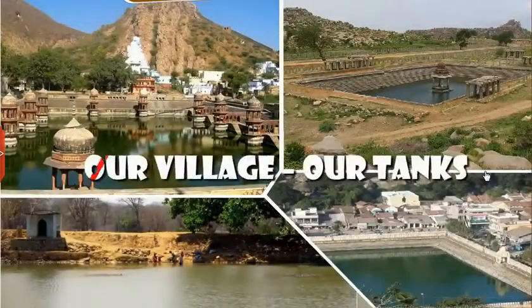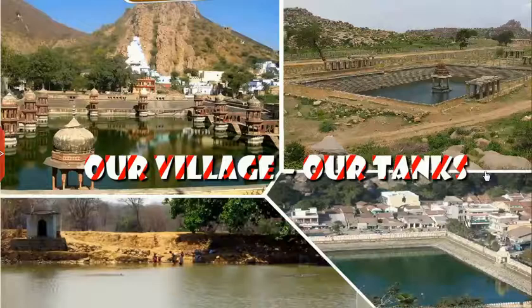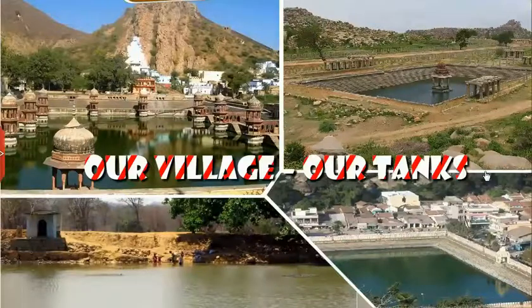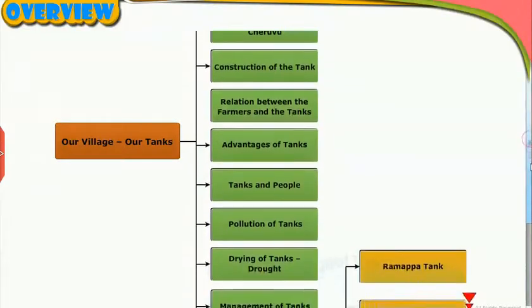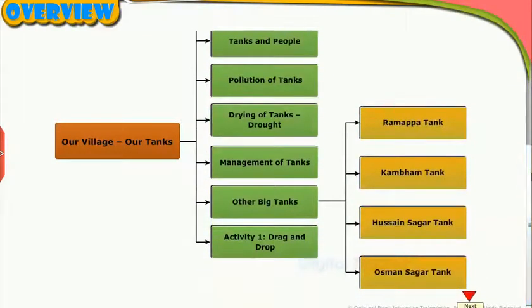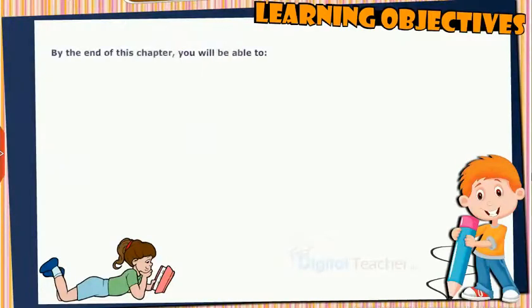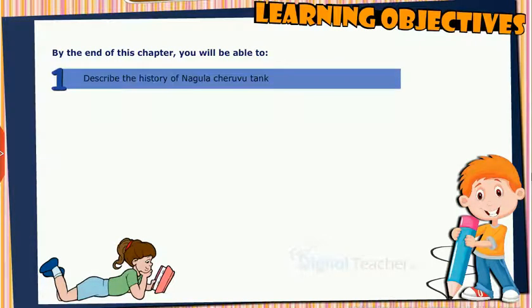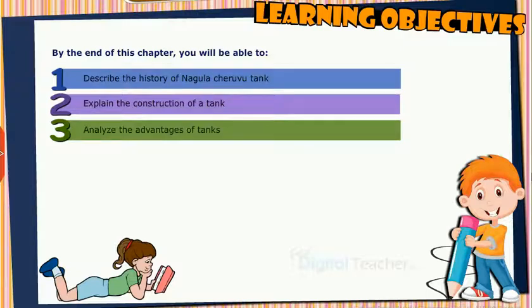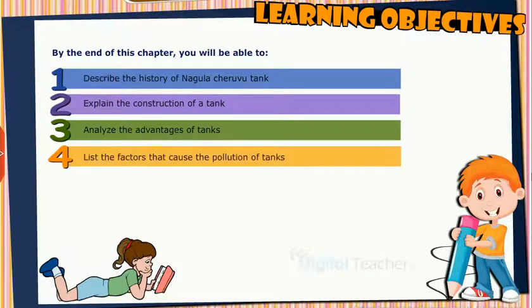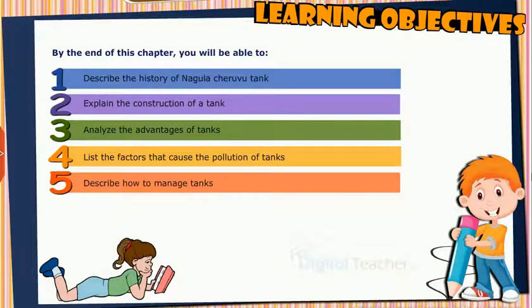Welcome to the chapter Our Village, Our Tanks. This slide presents the overview of the chapter. Learning objectives: by the end of this chapter, you will be able to describe the history of Nagula Chiruvu tank, explain the construction of a tank, analyse the advantages of tanks, list the factors that cause the pollution of tanks, and describe how to manage tanks.